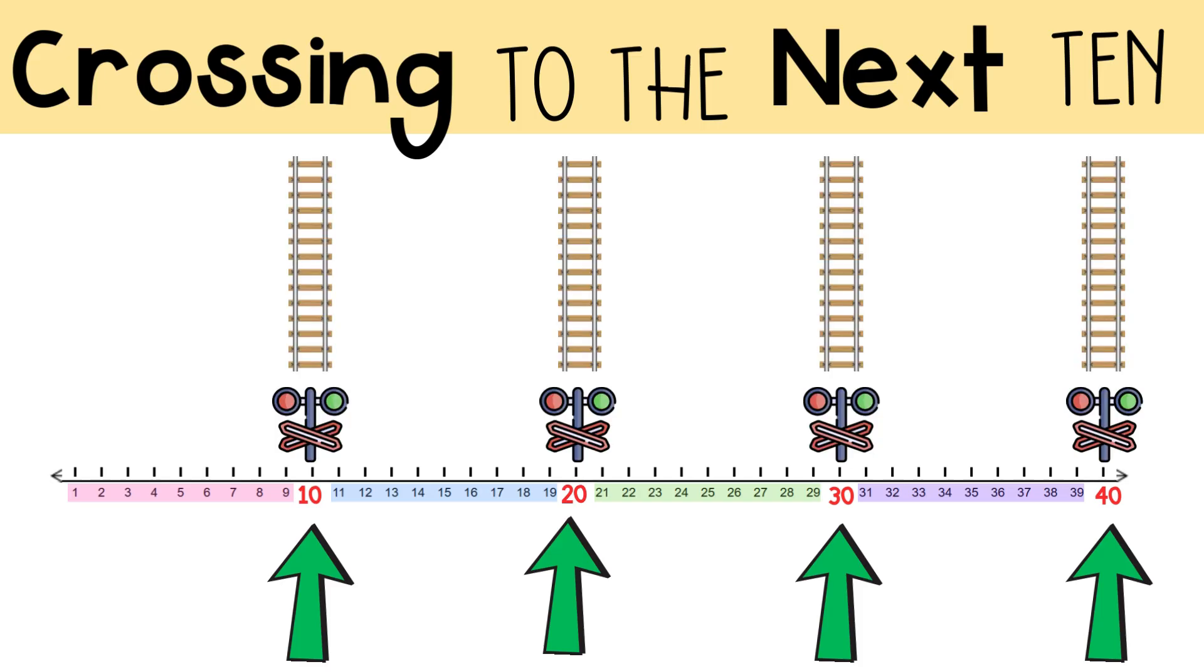Think of crossing to the next 10 like crossing a railroad track. Imagine you're walking along and you come to train tracks. To keep going, you have to step over them carefully. When adding, getting to the next 10 is the same. You're crossing over into a new group of numbers. Just like stepping over the tracks, you move into the next set of 10s.